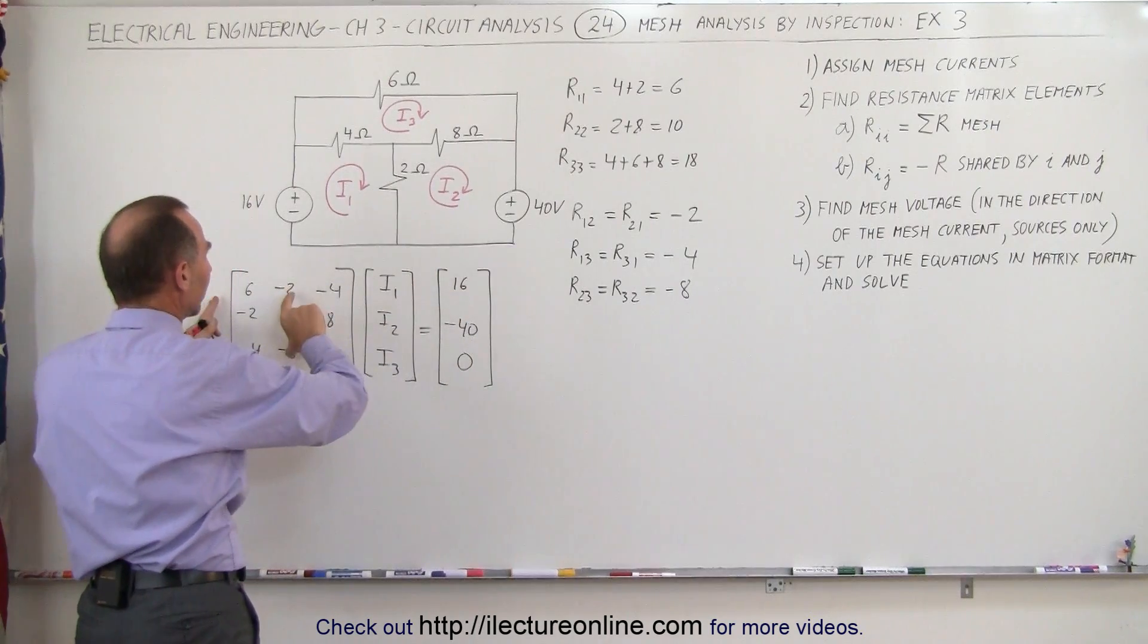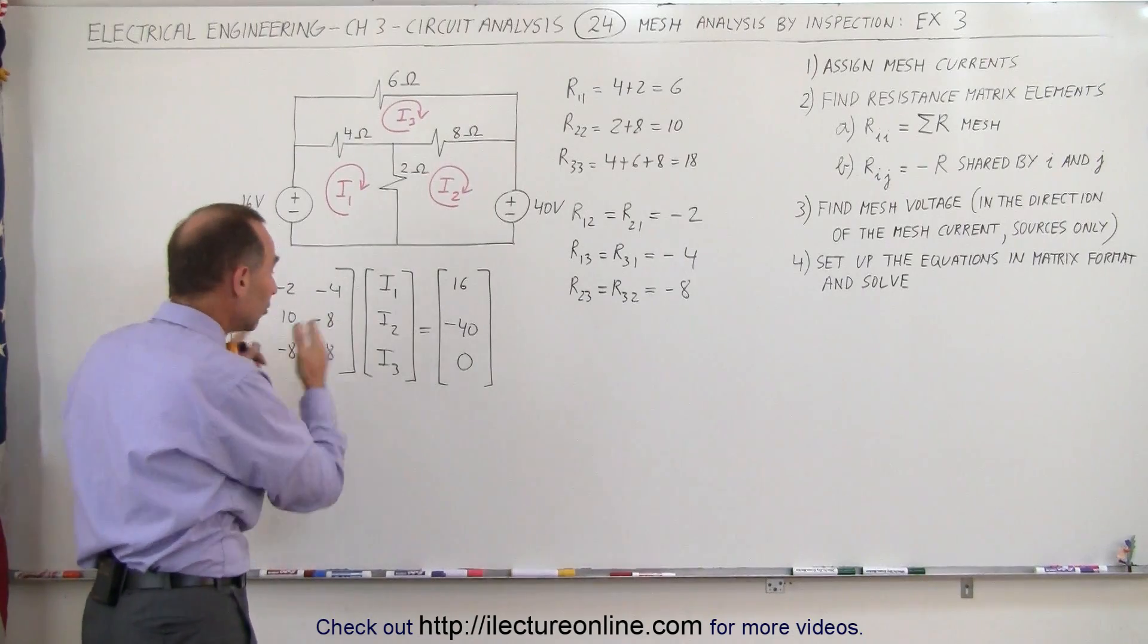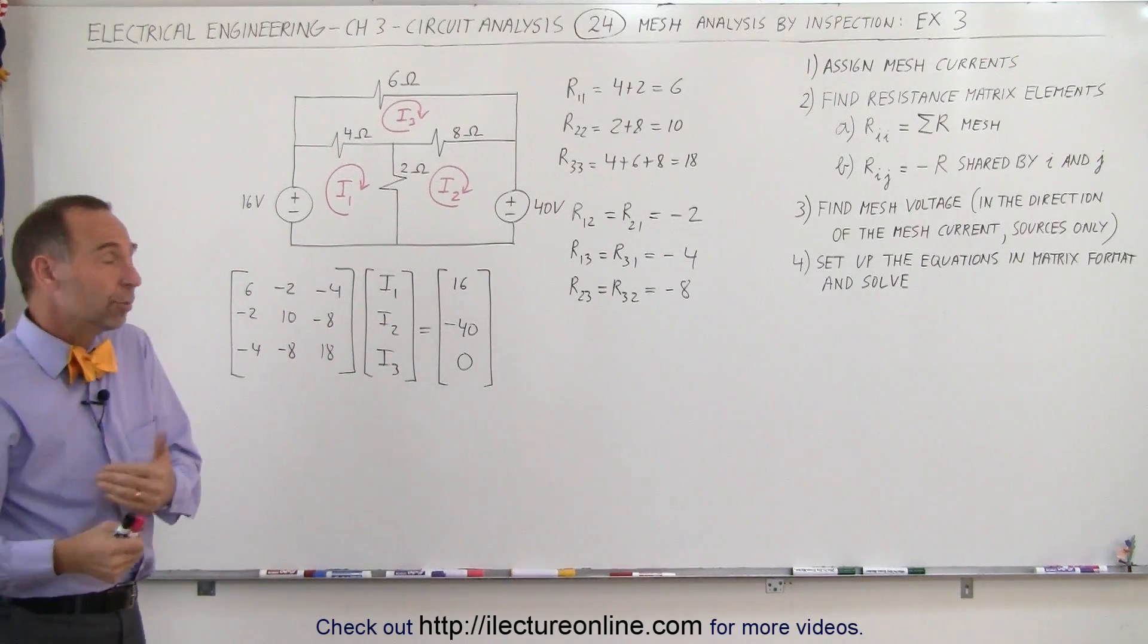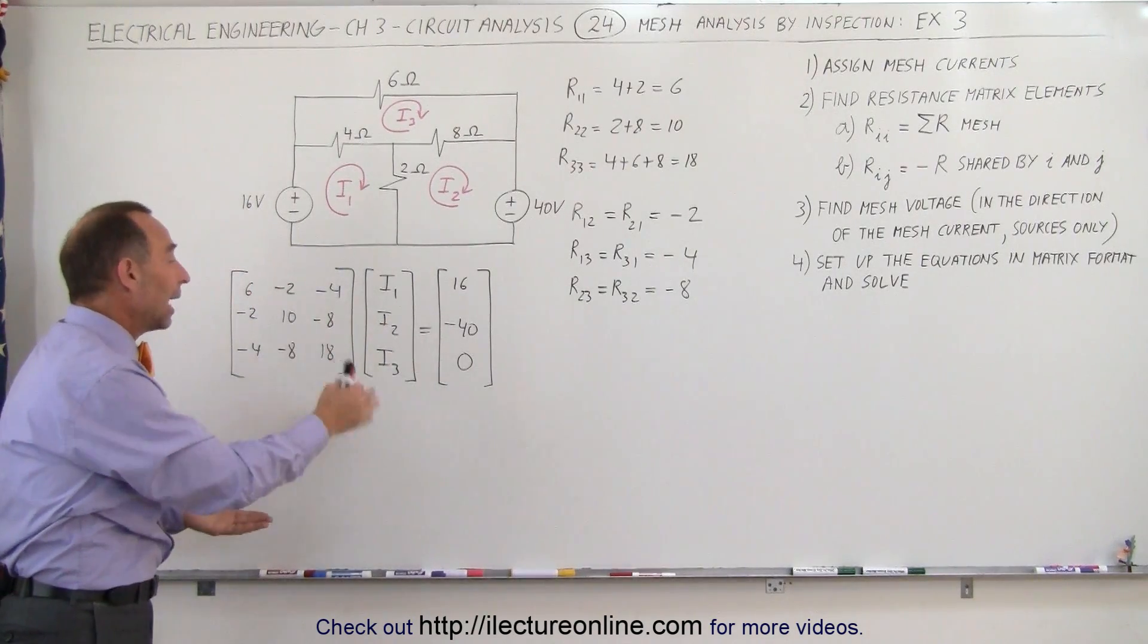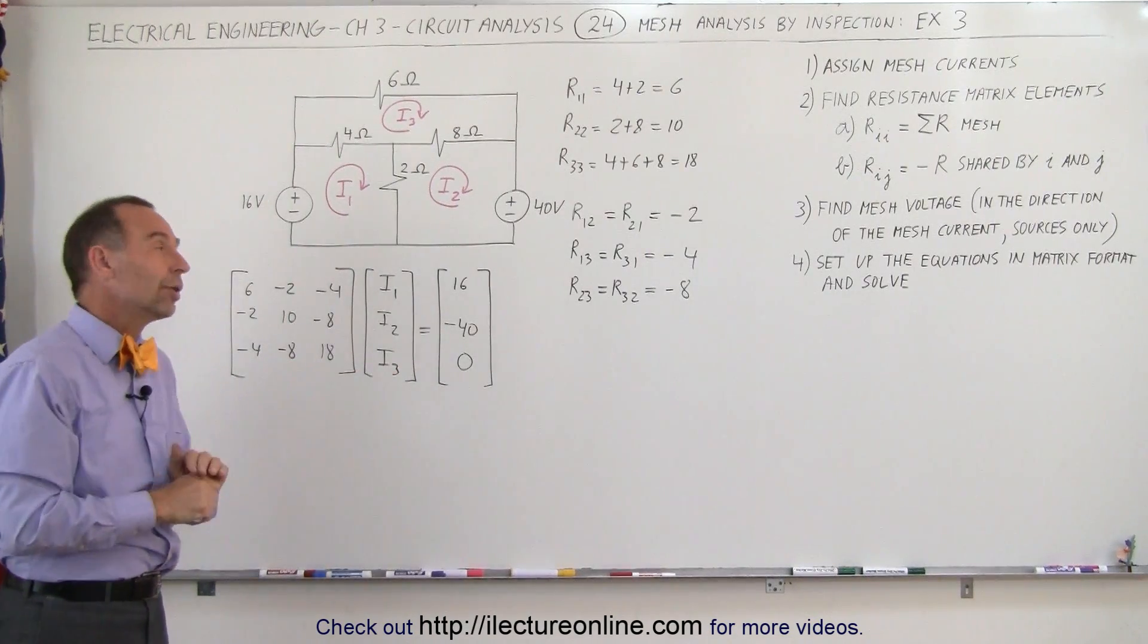Plug in the voltage for the second column, find that matrix. Plug in the voltage for the third column, find that matrix. And then divide each of the three matrices by the determinant to find the current for I1, I2, and I3. We've shown you some examples in previous videos on how to do that.